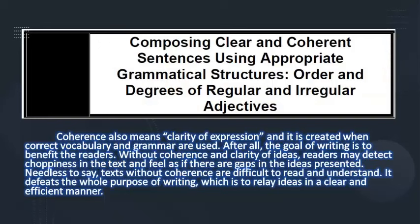Composing clear and coherent sentences using appropriate grammatical structures — order and degrees of regular and irregular adjectives. Coherence also means clarity of expression, and it is created when correct vocabulary and grammar are used. After all, the goal of writing is to benefit the readers. Without coherence and clarity of ideas, readers may detect choppiness in the text and feel as if there are gaps in the ideas presented. Texts without coherence are difficult to read and understand — it defeats the whole purpose of writing, which is to relay ideas in a clear and efficient manner.